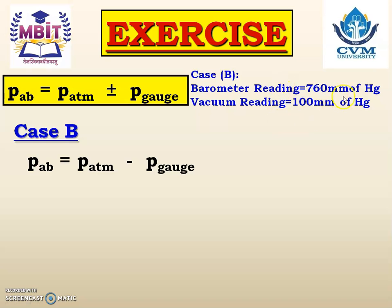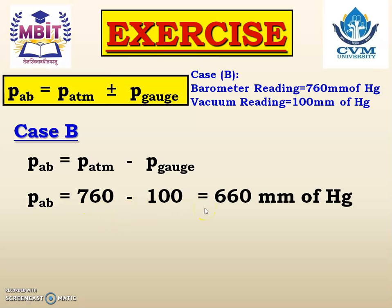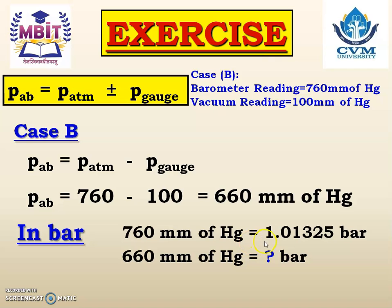As both readings are in the same unit, we can do the subtraction: 760 minus 100 gives 660 mm of Hg. Although the answer is correct, it is not in the correct unit. Converting to bar using 760 mm of Hg equals 1.01325 bar, we get 660 mm of Hg equals 0.8799 bar.